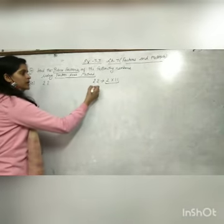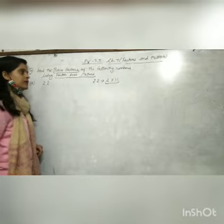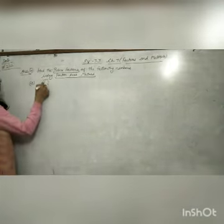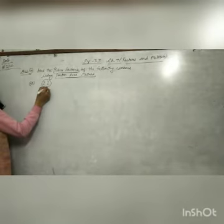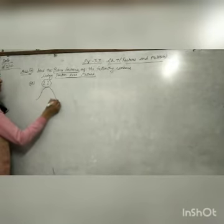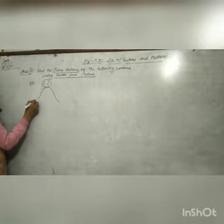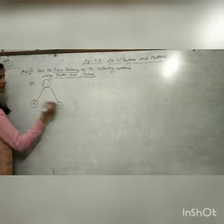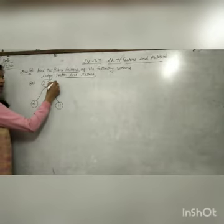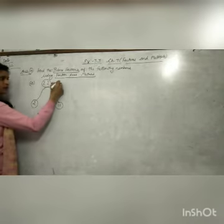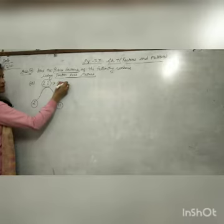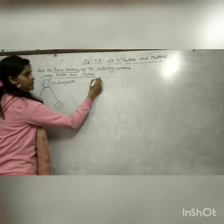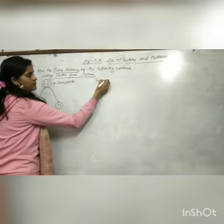For 22, find the factors. What factors are we going to get? 2 and 11. So we draw the factor tree shape like this. The first factor is 2, and next, multiplied by 11. Now, 22 is a composite number because it has more than two factors. But 2 is a prime factor.